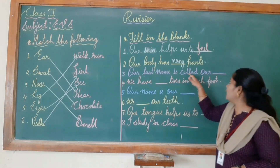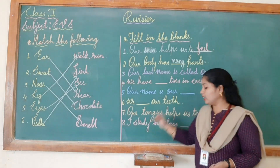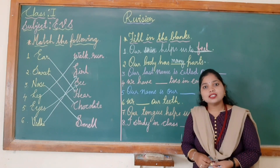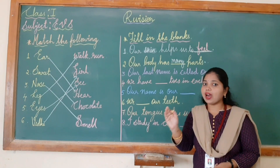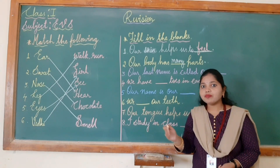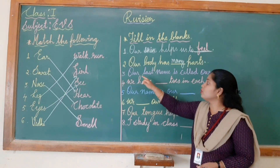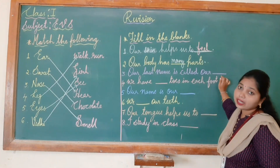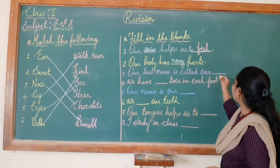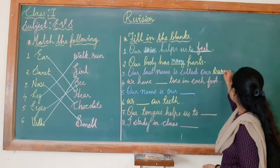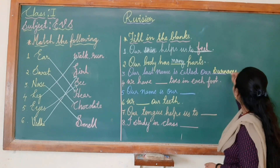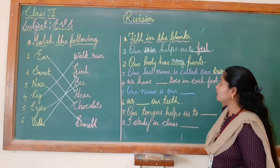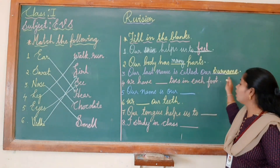Next: our last name is called a dash. Children, we have learned that our last name is called a surname. For example, Vidhi Sharma — Vidhi is the name and Sharma is the surname, which is the last name. So I will write 'surname' here. Our last name is called a surname.